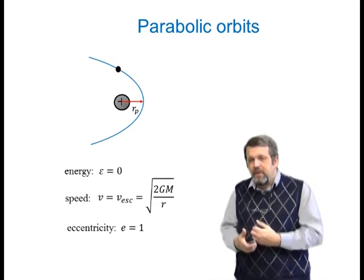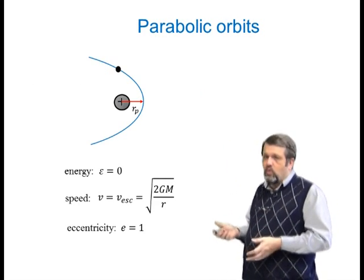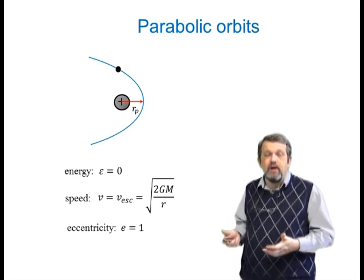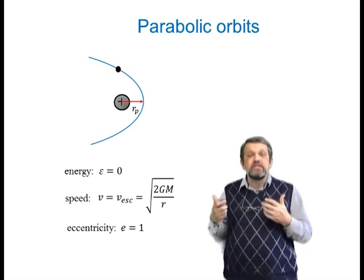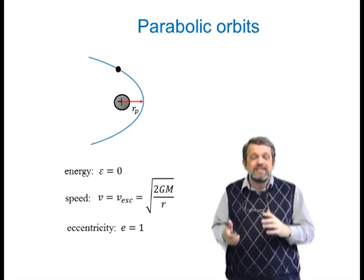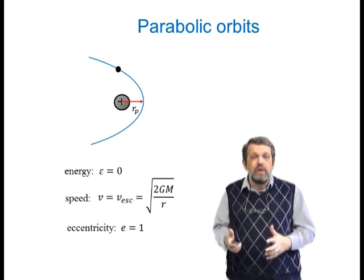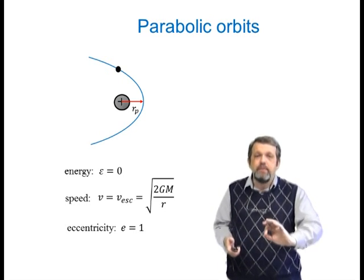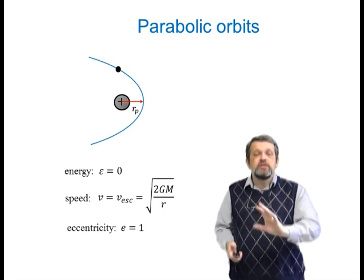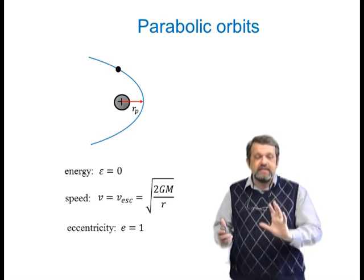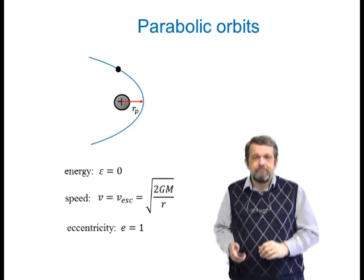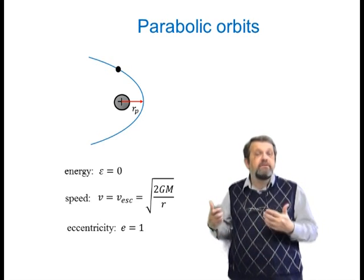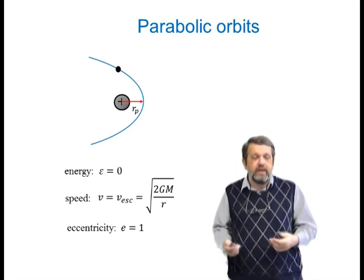We also have parabolic orbits. In a parabolic orbit, the energy is just equal to zero, which means the speed anywhere on the orbit equals the escape speed at that point, because the escape speed is the speed at which your specific energy is zero. Parabolic orbits all have eccentricity equal to one.